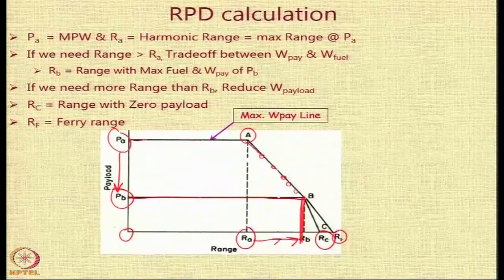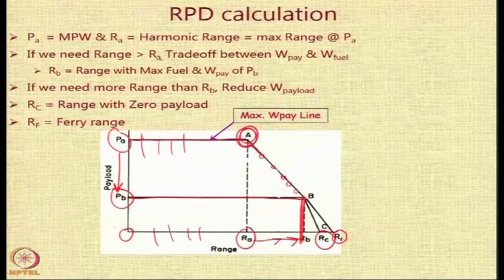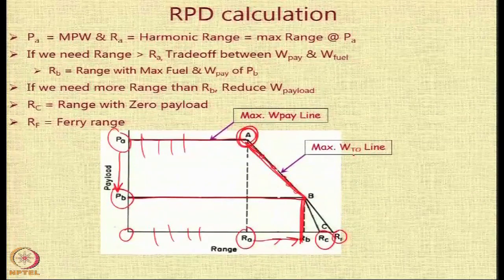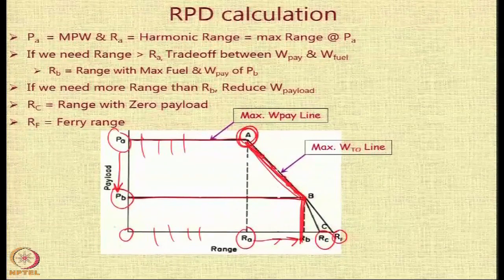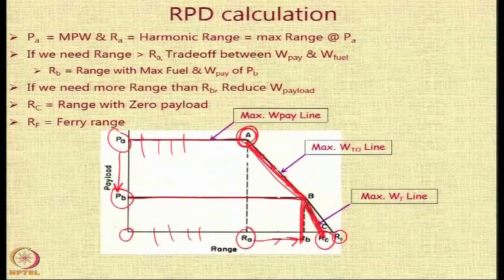The line along which range is increased by carrying more and more fuel until you hit the maximum takeoff weight point is called the maximum payload line. Along this line, the payload is reducing and the fuel is increasing, but the max takeoff weight is constant — this is the max takeoff weight line. Then there is a third line where the fuel tank is full: this is the maximum fuel weight line, and the takeoff weight and payload reduce accordingly.